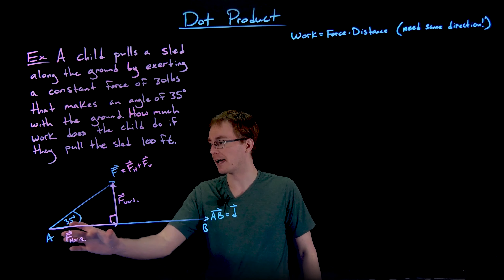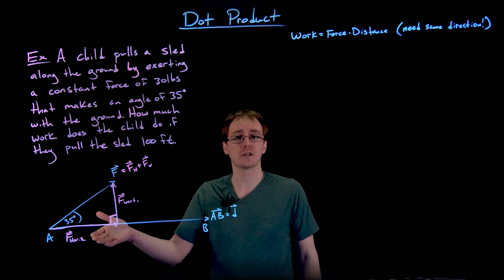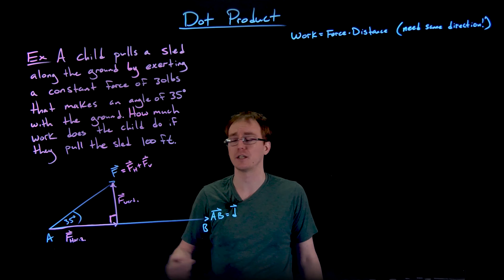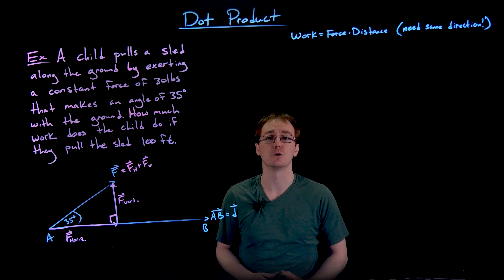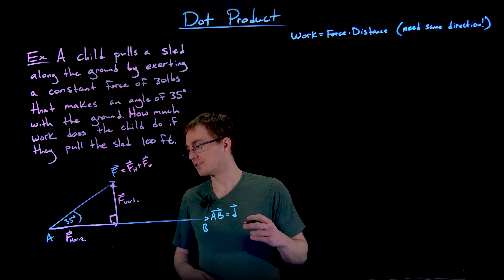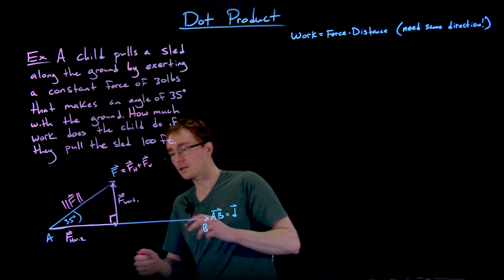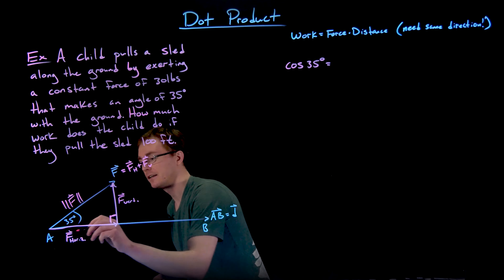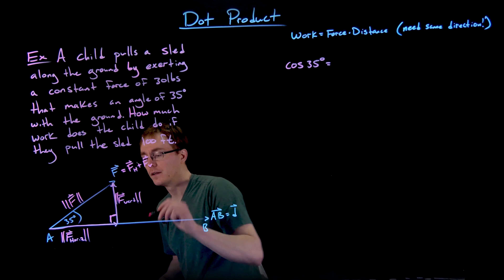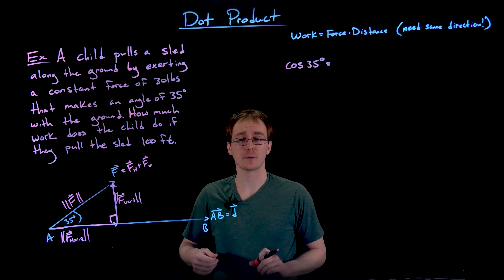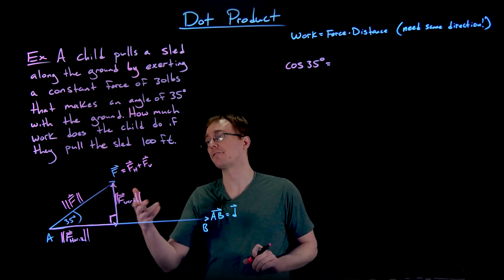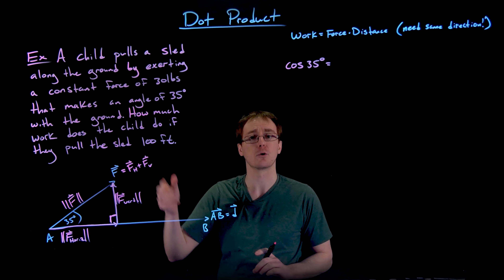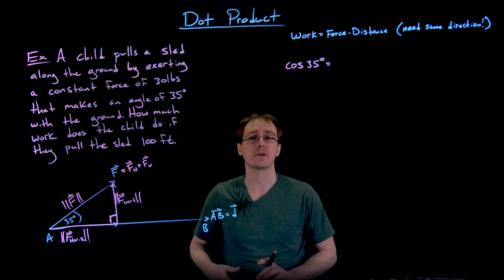We want to describe how much of our force is actually in the direction of the displacement — the direction in which the child is pulling the sled. It's not going to be all 30 pounds; some of that force is in the upward direction. We only need the amount of that force that is in the horizontal direction, or the direction of motion. Using right triangle trigonometry, if we take cosine of the 35-degree angle, we can express that as the ratio of the adjacent side — the magnitude of the horizontal force component we need — to the magnitude of our force vector F (the hypotenuse). We want to avoid using the vertical component since we weren't given any information about it and it's not needed for this calculation.